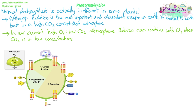In the Calvin cycle, normally carbon dioxide combines with RuBP to make the first molecules, catalysed by rubisco. But when oxygen binds to RuBP instead of carbon dioxide, it makes only one 3-PGA molecule instead of two, and it makes another two-carbon compound. This two-carbon compound can't carry on in the Calvin cycle like the PGA molecule can, so it needs to be converted back. To do that, we need to use ATP and some amino acids.